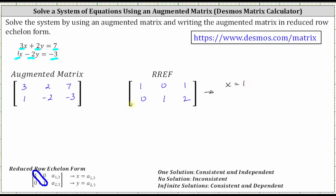The second row represents the equation one Y equals two, or Y equals two. So this is the solution to the system, which is often written as an ordered pair. The ordered pair is one comma two, which means X equals one and Y equals two will satisfy both equations.